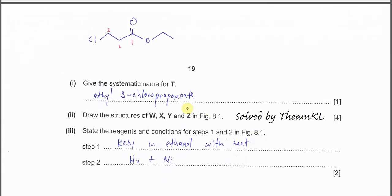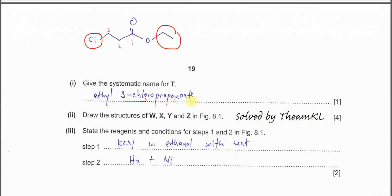Give the systematic name of T. So it's ethyl — and it's one, two, three — three-chloropropanoate.